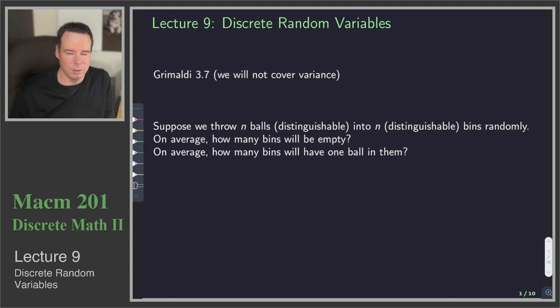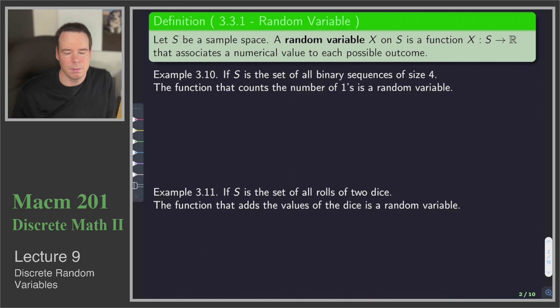Let's get into what a random variable is. If we start with a sample space S, then a random variable is just a function that takes outcomes from S and assigns a value to them — in this case a real number. So it's a function that takes elements from our sample space and assigns a real number to them.